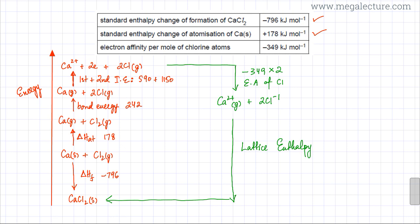Finally, the last step: you have gaseous ions Ca²⁺ and 2 Cl⁻, and they form CaCl₂ solid. This last step is your lattice enthalpy, and it moves downwards — meaning it is exothermic. We need to find this lattice enthalpy. I've now drawn the Born-Haber cycle according to the energy axis: upwards means gain of energy, downwards means loss of energy. Hess's Law states the energy changes of one path equal the sum of the other path.